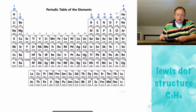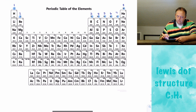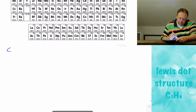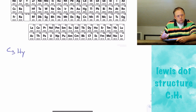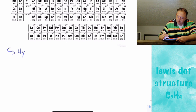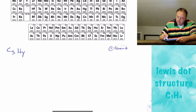Last lecture we were talking about Lewis dot structures for covalent compounds. Let's take another example: C3H4. So let's draw a Lewis dot structure for C3H4. The first thing we need to do is count valence electrons.